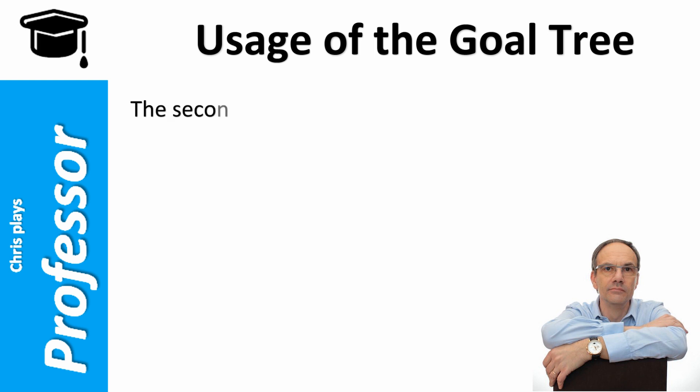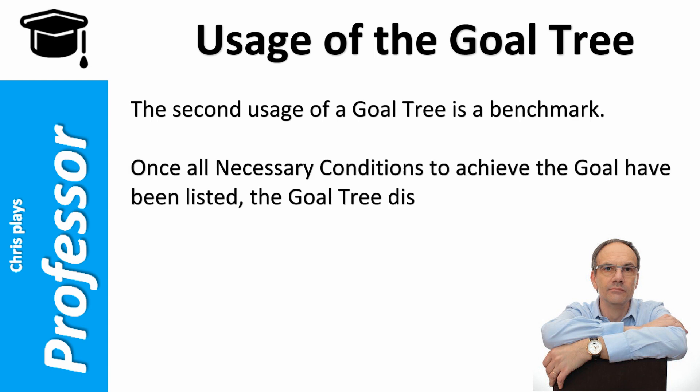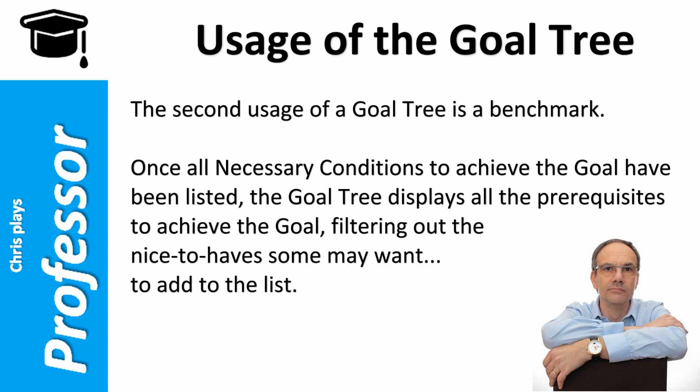The second usage of a goal tree is a benchmark. Once all necessary conditions to achieve the goal have been listed, the goal tree displays all the prerequisites to achieve the goal, filtering out the nice-to-haves that some may want to add to the list.